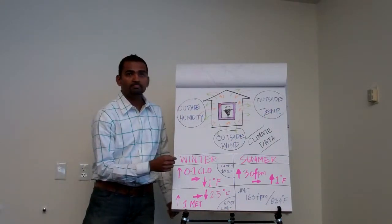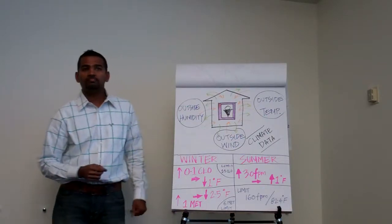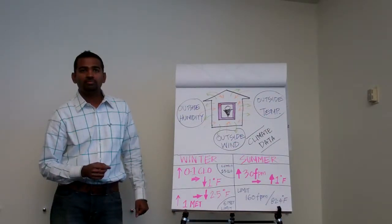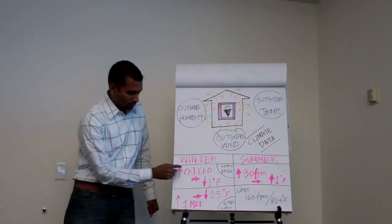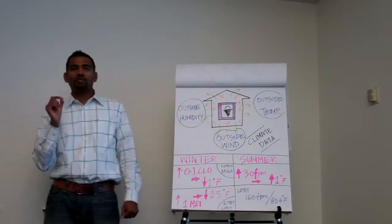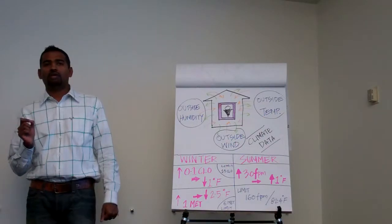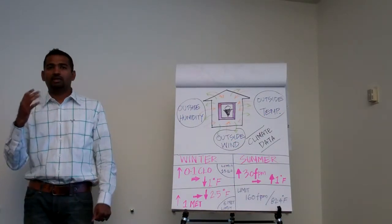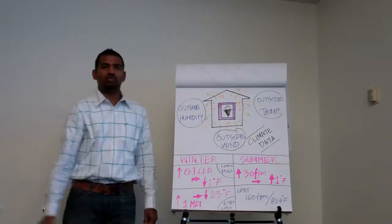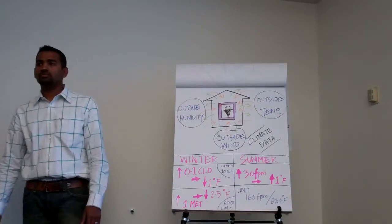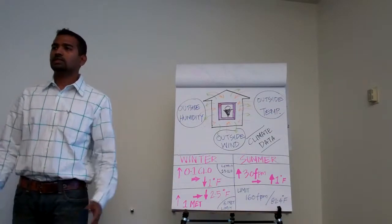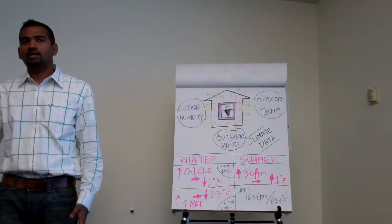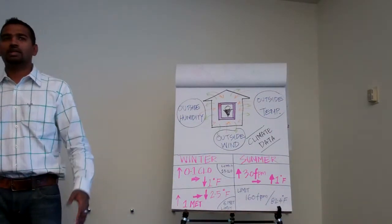Point one CLO equates to reducing one temperature degree — or increasing it. And there is a limit: 1.5 CLO is the maximum, because otherwise people can't deal with it.